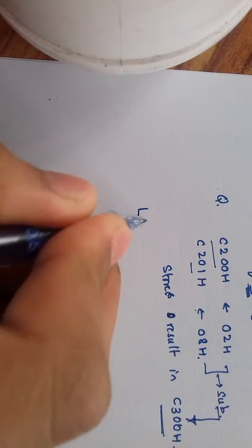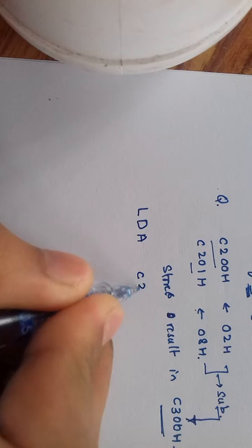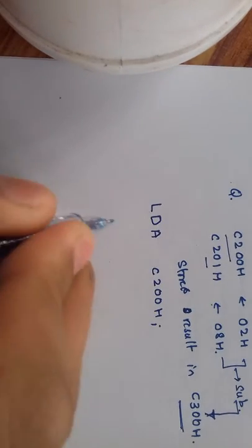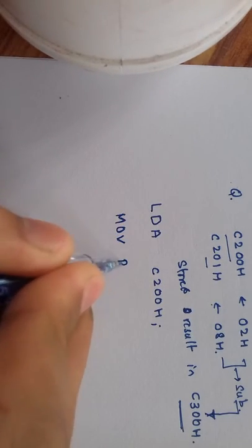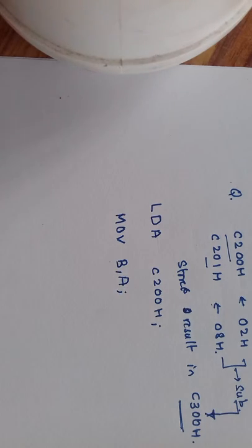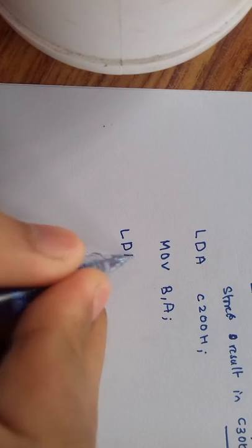So first what we do, we load an accumulator with the content of C200H and we move the content of an accumulator to any other register. In our case we have B register and we move a content of an,